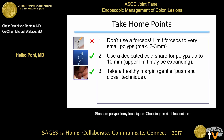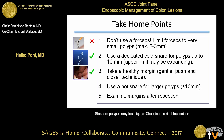Returning to the take-home points: number one, do not use forceps as a general rule—exception only for very small polyps in difficult-to-reach positions. Number two, use a dedicated cold snare for all polyps up to 10 millimeters; the upper limit is expanding as new studies emerge. Number three, use a gentle push-and-close technique to take a healthy margin—unlike hot snare, do not lift off the wall. Additionally, use hot snare for larger polyps of 10 millimeters or more, and always examine the resection margin after resection to assure completeness.